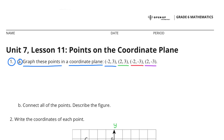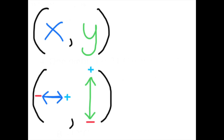I color-coded each set of these points so that you can see where they end up on the coordinate plane. The first number in your set of points moves along the x-axis — that's the horizontal axis — right or left. A positive number, you'd count to the right; a negative number, you'd count to the left. The second number moves along the y-axis or the vertical axis. A positive number would move up and a negative number would move down.